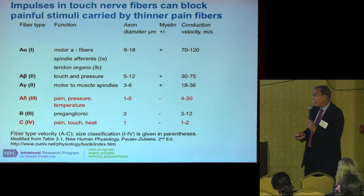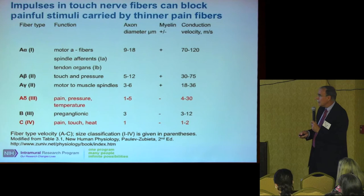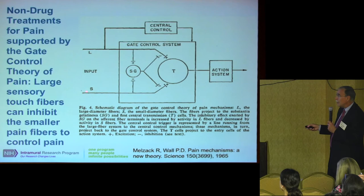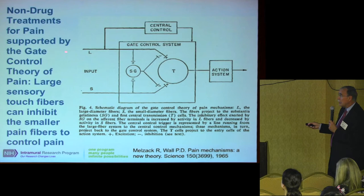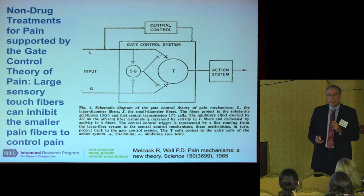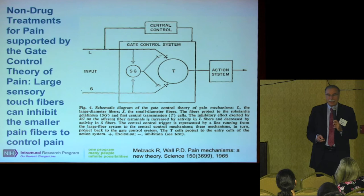You have small fibers for pain and larger fibers for touch and pressure. There's the gate theory of pain: the small fibers for pain and temperature coming into the spinal cord can be blocked by the larger fibers. That's why nice things help block pain — massage, exercise, enjoyable activities — they can block some of the pain sensation, not all of it, but they certainly help.